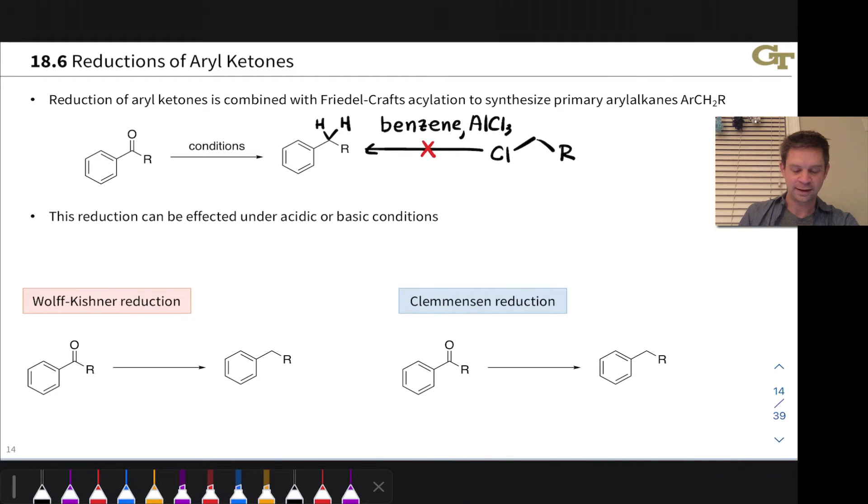So for example, if you try to take this primary alkyl halide and treat it with benzene and AlCl3, you'd get some amount of the primary product but a large amount of rearranged secondary and tertiary products if rearrangement is possible in this R group. So generally using primary alkyl halides like this is not a good approach to synthesizing primary alkyl benzenes.